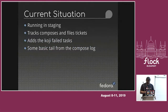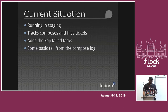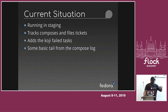The current situation is it's only running in staging and doing its thing, but we are not using it because we are just testing things. It just tracks the composes and files tickets for all the failed tasks, with a link to the Koji task — which will be really helpful for people so they can go into those failed tasks and look at them and fix the issue. It will also add a basic tail of the compose log, just a couple of lines.